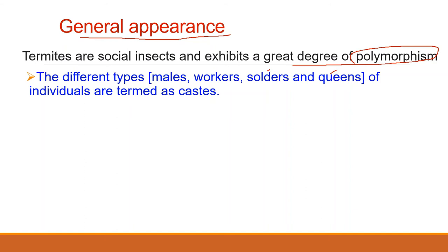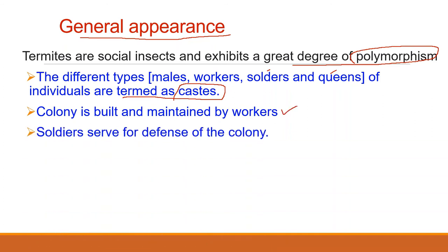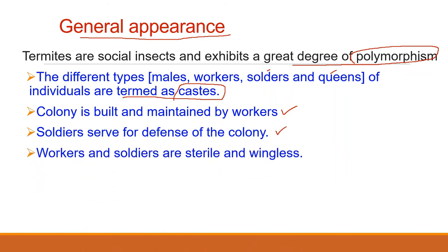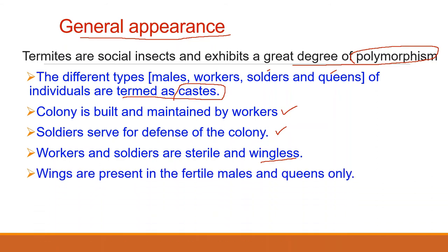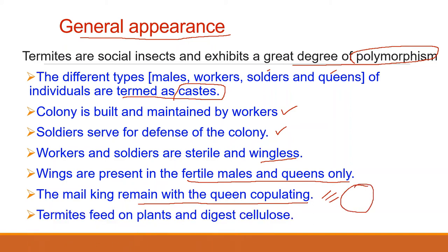All these individuals forming the colony of termites are known as castes. The colony is built and maintained mainly by workers and soldiers. Soldiers possess large heads and mandibles and serve for defense of the colony. Workers and soldiers are sterile and wingless, and include both males and females. Wings are present in fertile males and queens only during the brief nuptial flight. Termites feed on plants and to digest cellulose they harbor symbiotic flagellates which create the enzyme cellulase for cellulose digestion.